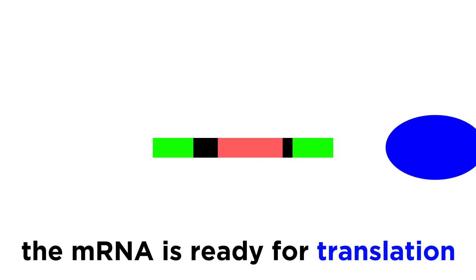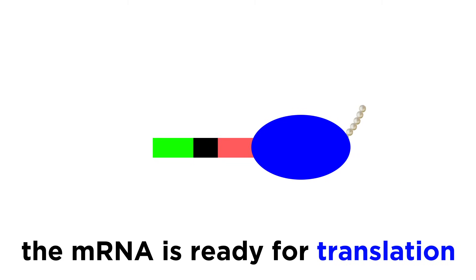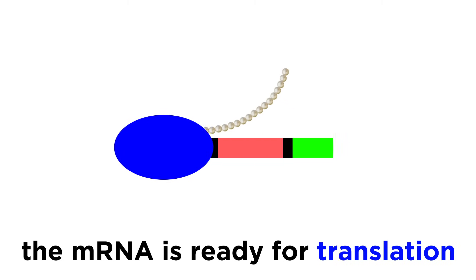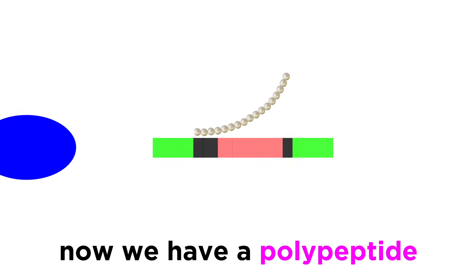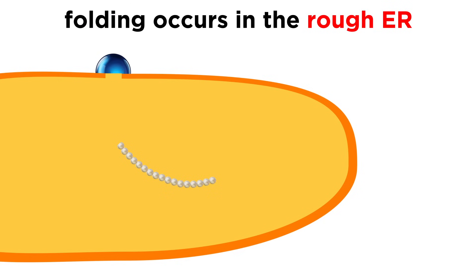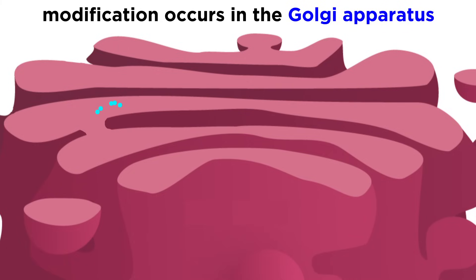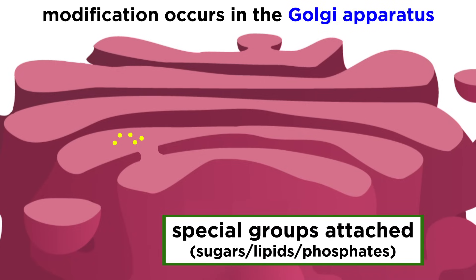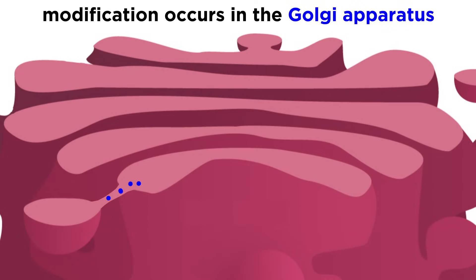This is where translation occurs. In translation, the mRNA, a ribosome, and many tRNAs work together to produce a polypeptide. Some of these polypeptides will then be complete, but others will instead undergo folding, likely in the endoplasmic reticulum, and sometimes modification in the Golgi apparatus, where groups like sugars, lipids, or phosphates are attached. Then the proteins are delivered to where they need to go.